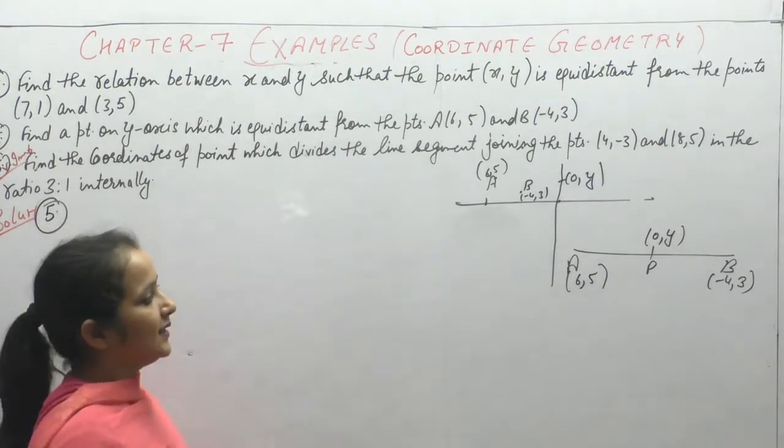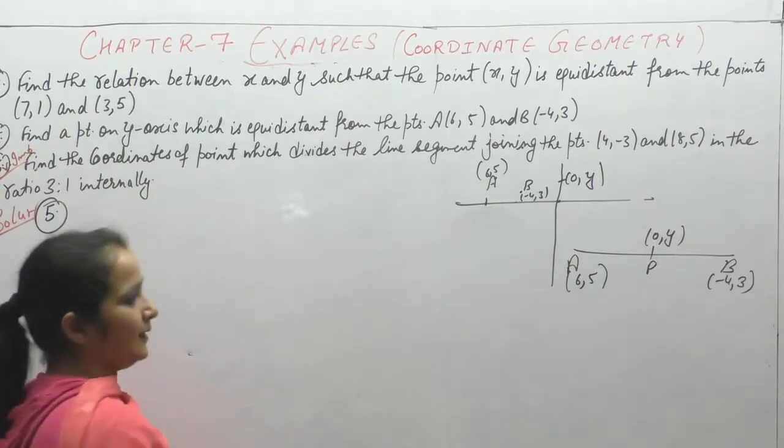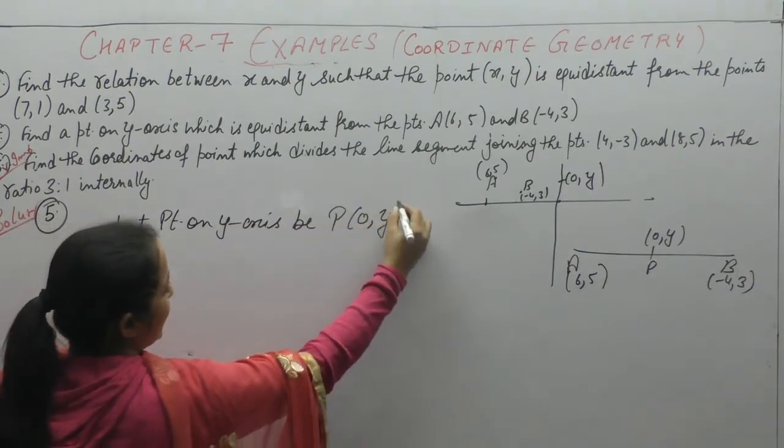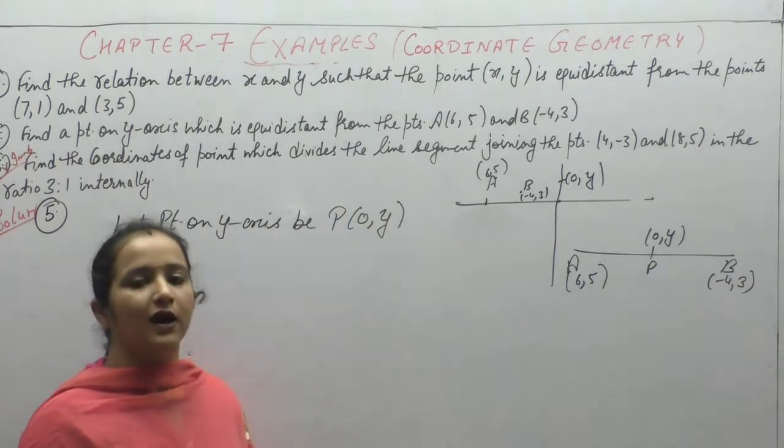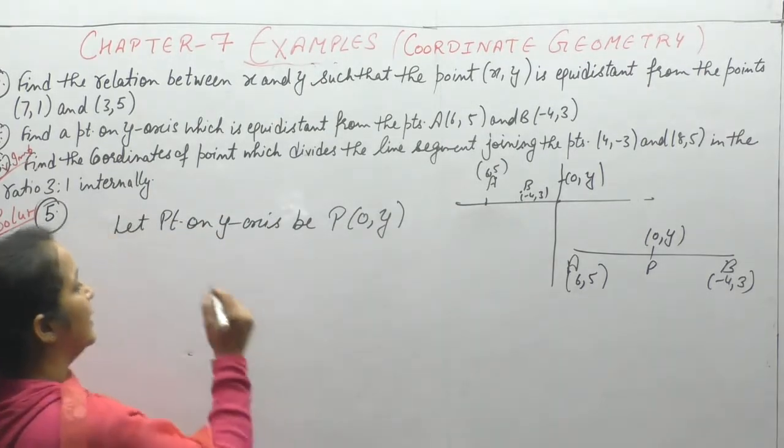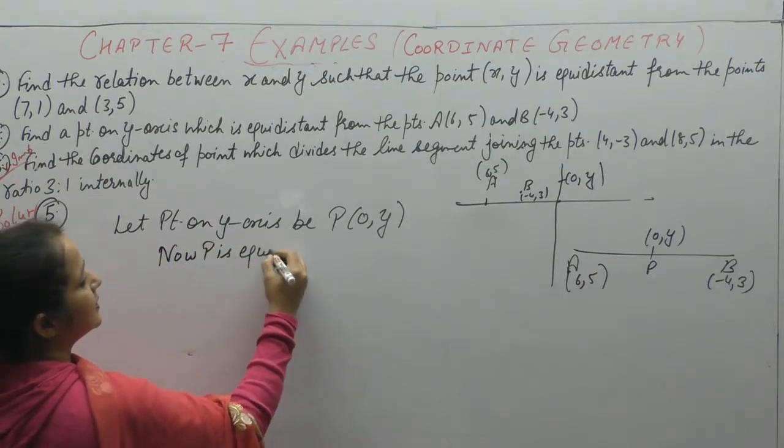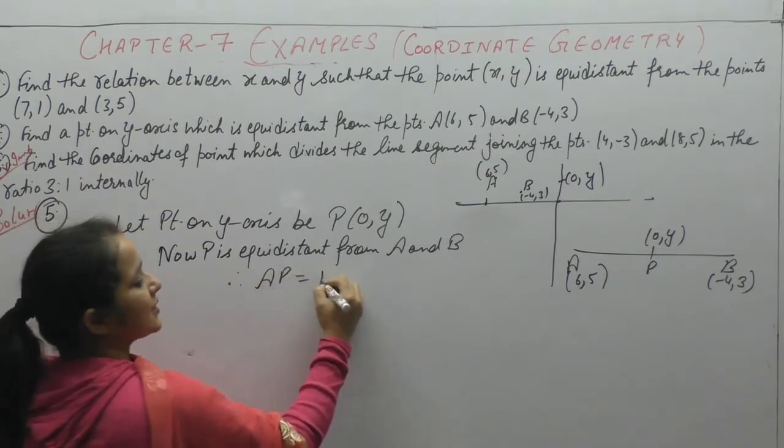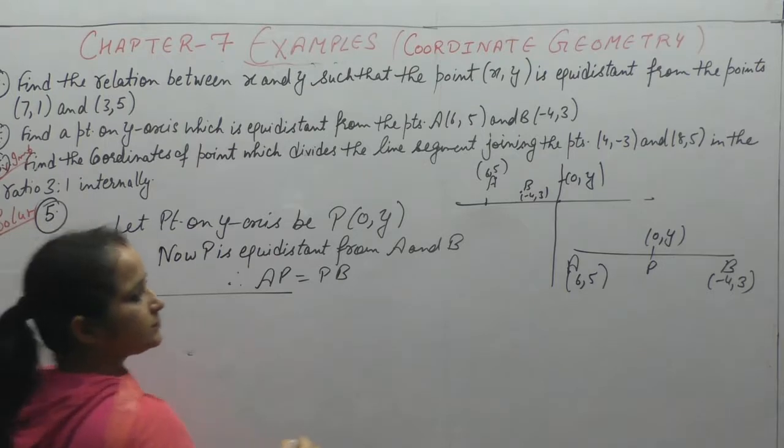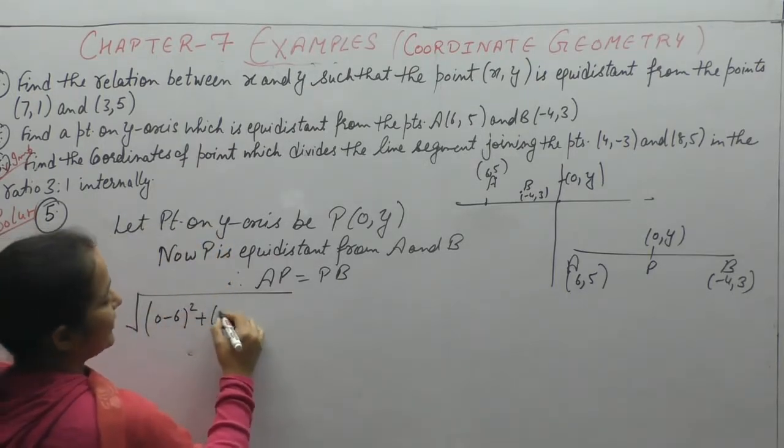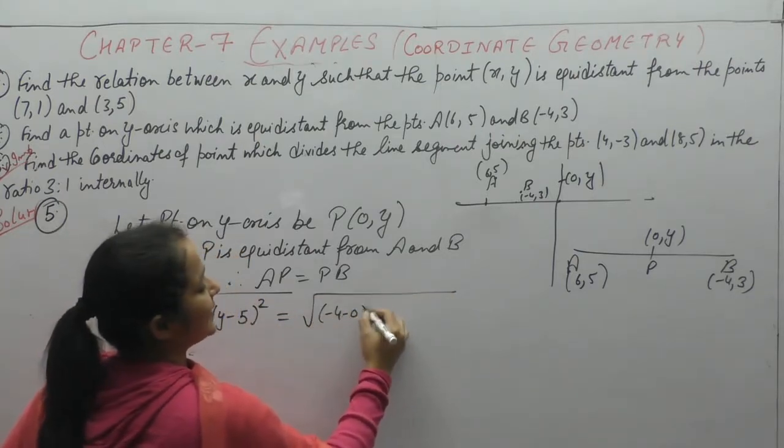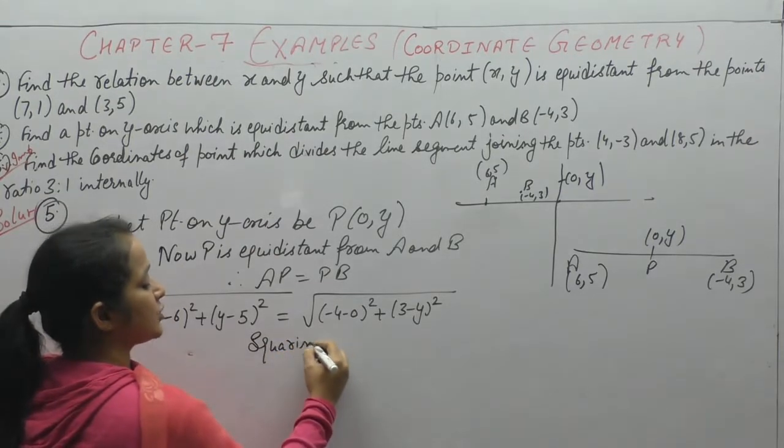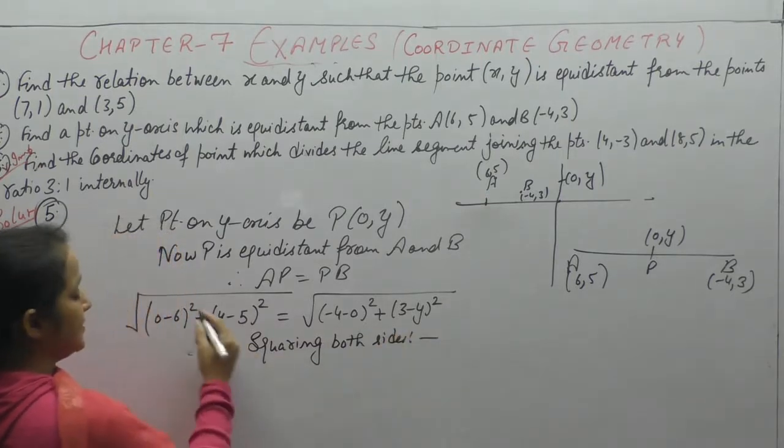Let point on y-axis be P(0,y). Point P is equidistant from A and B, therefore AP = PB. Applying distance formula: √[(x2-x1)² + (y2-y1)²] for both AP and PB. Squaring both sides.